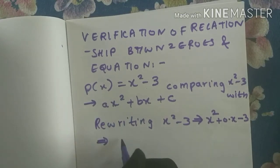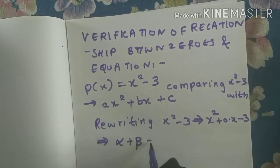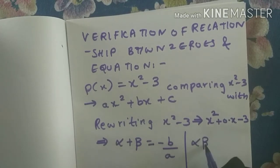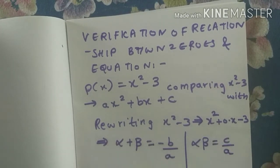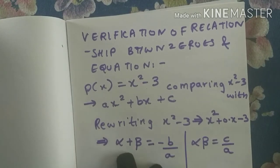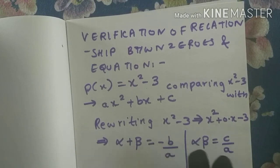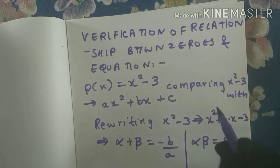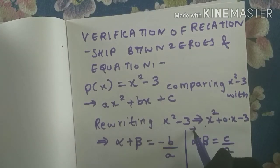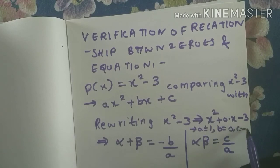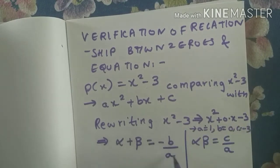For verification of the relationship between zeros and coefficients, the formulas are: alpha plus beta equals minus b by a, and alpha times beta equals c by a. These show the relationship between zeros and coefficients. From the equation x squared plus 0·x minus 3, comparing with ax squared plus bx plus c: a equals 1, b equals 0, and c equals minus 3.